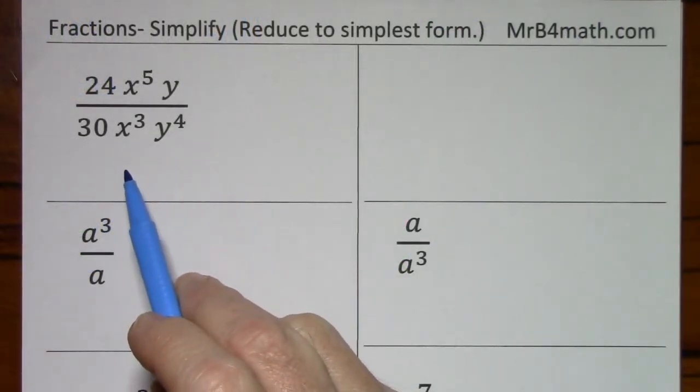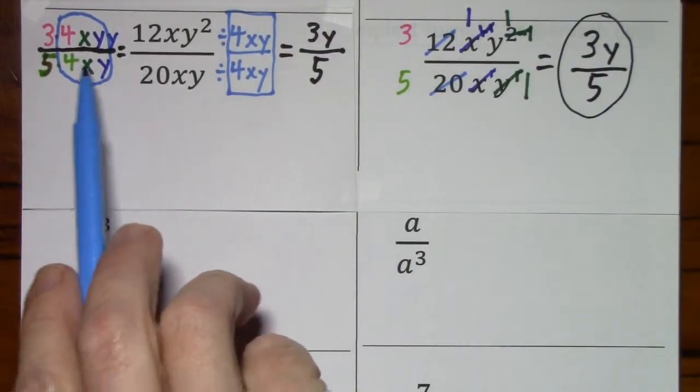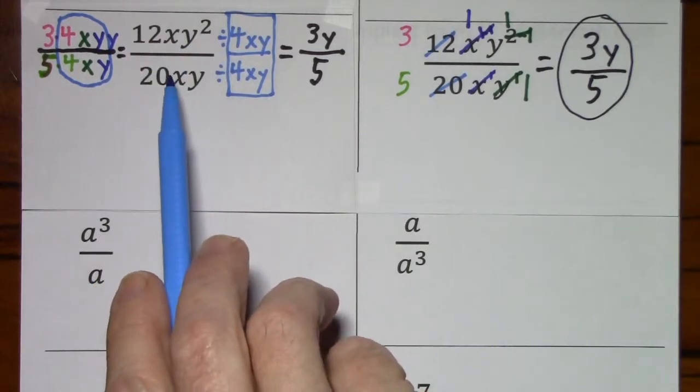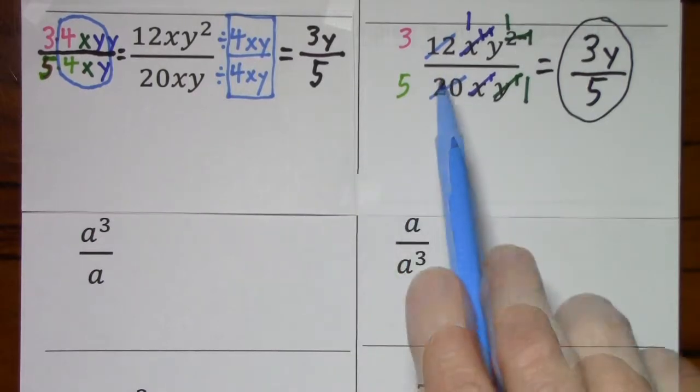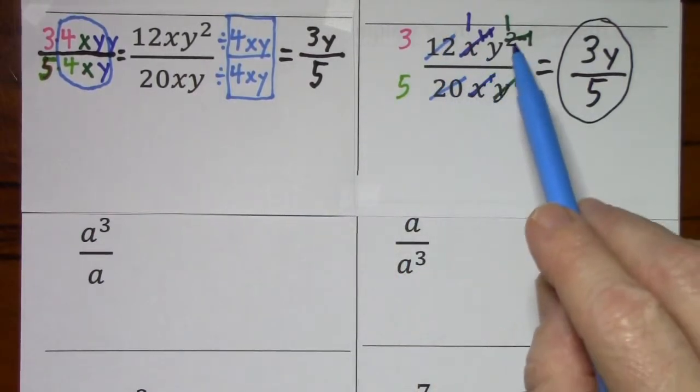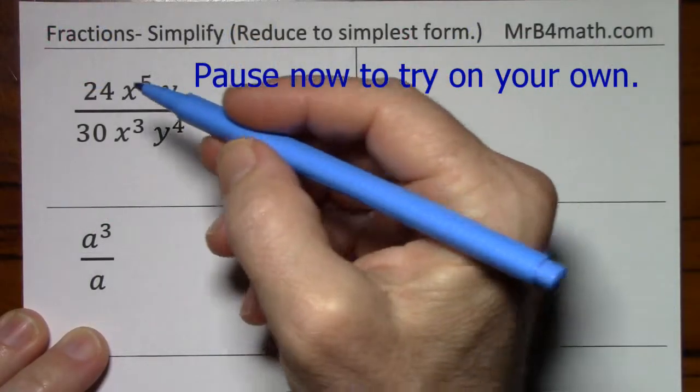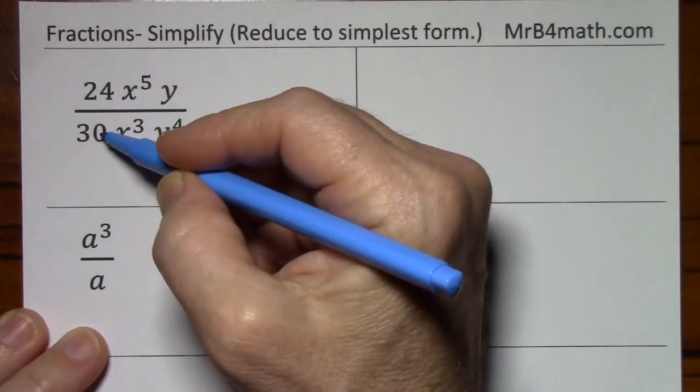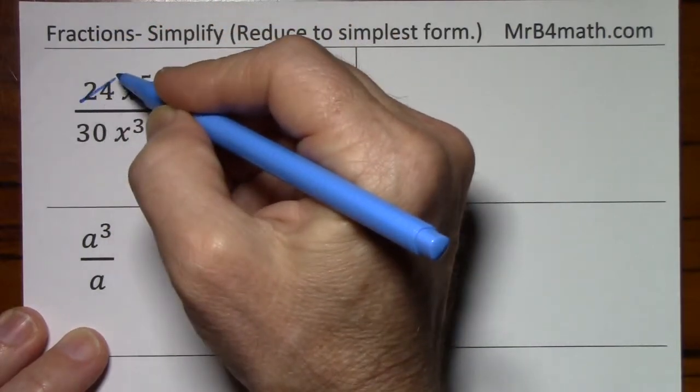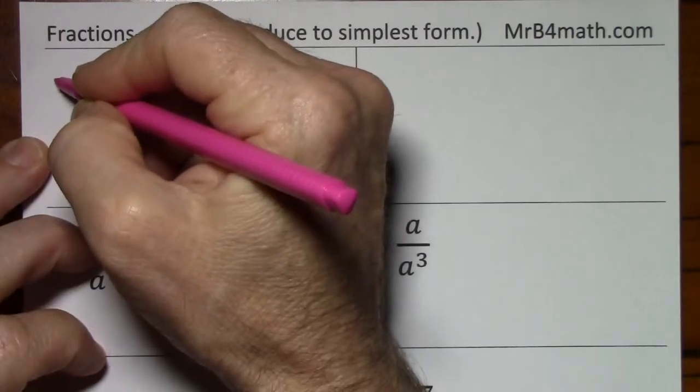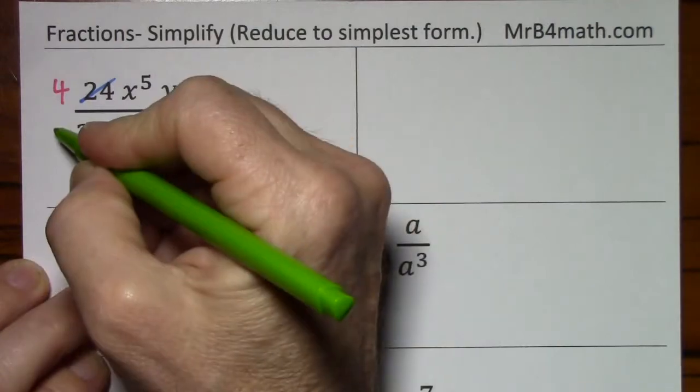You might want to pause the video and just see if you can simplify this. I wouldn't suggest writing it out in this factored form. The numbers and exponents are going to get quite large eventually. I would just see if you can go directly to dividing out the greatest common factor and subtract exponents. So, looking at 24 and 30, the greatest common factor is 6. Divide by 6, you're left with 4. Divide by 6, you're left with 5.